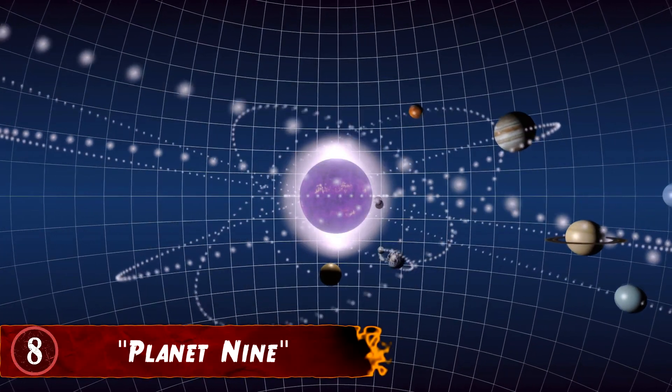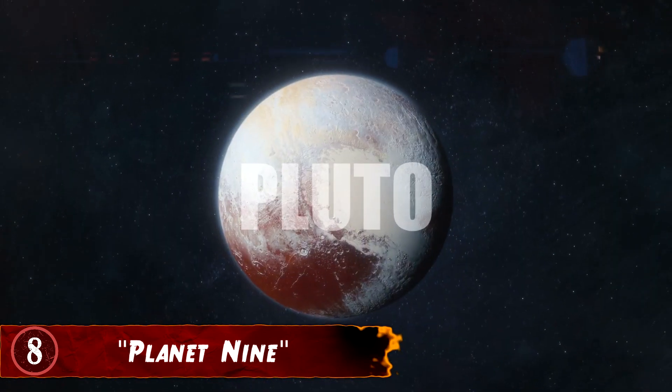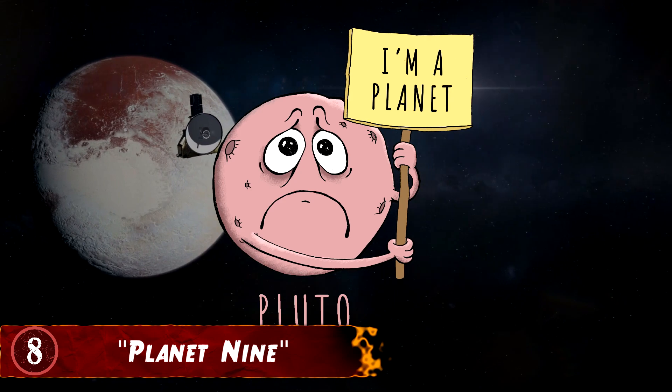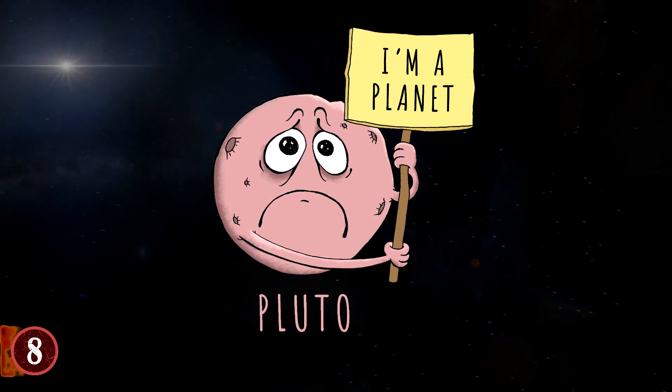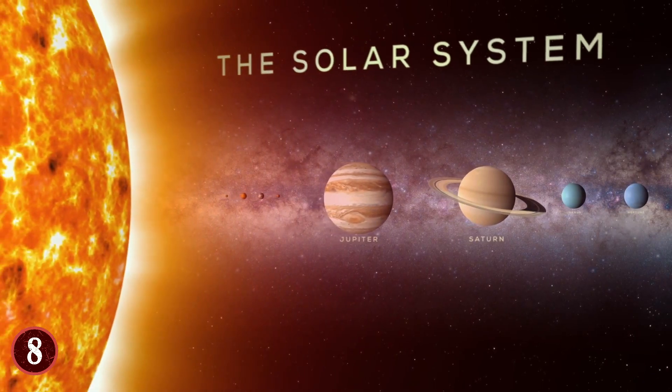Number 8: Planet 9. Once upon a time, the solar system that contained Earth had 9 planets, the 9th of which was called Pluto. However, eventually that title was taken away from Pluto. Now the solar system only has 8 planets. Or does it?